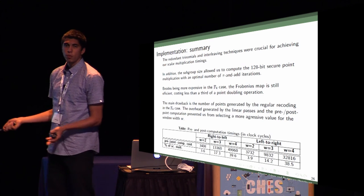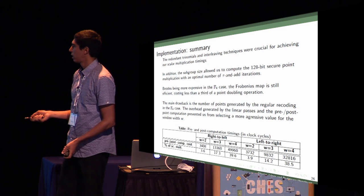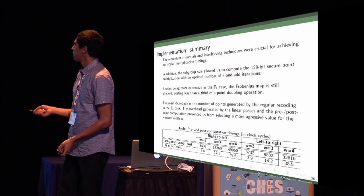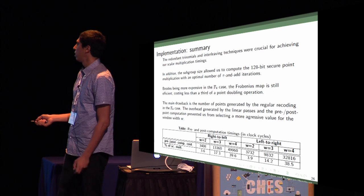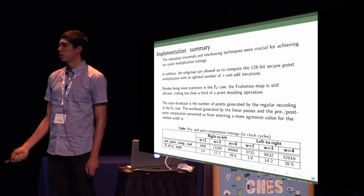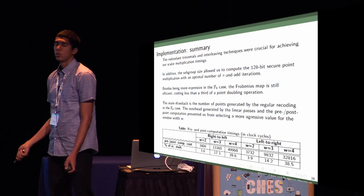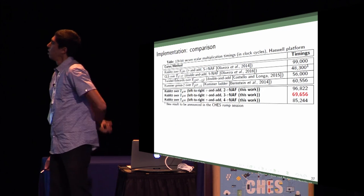However, the drawbacks are the number of points generated by the regular recoding in the F4 case. The linear passes become costly, and you see that with F4, almost 40% of our scalar multiplication is done precomputing or post-computing points. We need to restrict to width equals 3.